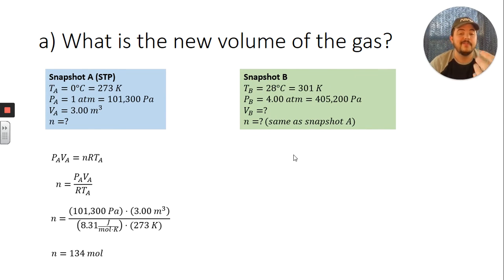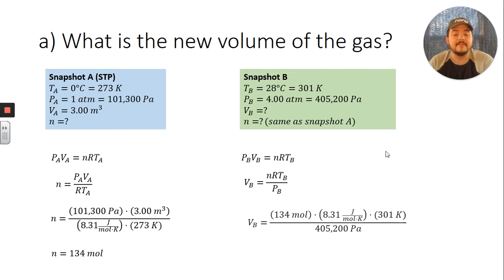Now we know how much gas we have, so we can go over here to snapshot b and figure out the volume at that snapshot. PV equals nRT again. This time we're going to solve that equation for the volume at snapshot b, which is going to be nRT over P. Plug in the values from the box above and our 134 moles that we just found, and we end up with the volume at b being 0.827 cubic meters.